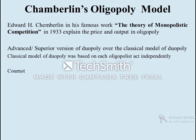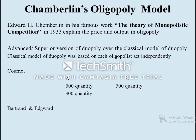In the Cournot model, the producer first produces goods and services and accordingly charges the price. Suppose sellers A and B are each producing 500 units of output. If A wants to produce less — say 300 units — he assumes B will continue producing 500 units, and independently decides to produce 300 units, charging the price accordingly.